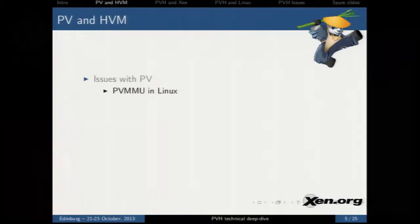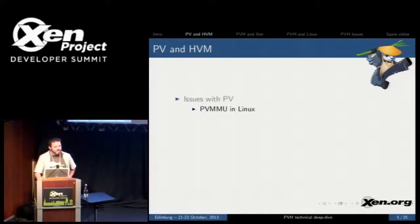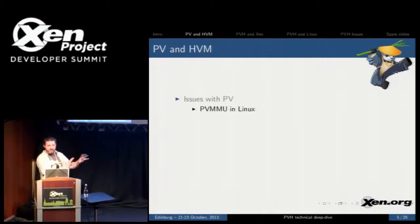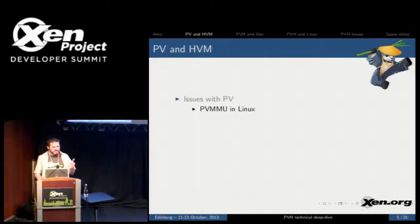So why PVH in the first place? Issues with PV. The big issue with PV as we have it right now is the PVMMU code in Linux. Most of the PVOps are kind of out of the way and they're not very expensive. Most of the Xen code in Linux is kind of in its own little area. But the PVMMU code is right in the guts, in the middle of the x86 code, and this has caused a lot of pain for the community as a whole.